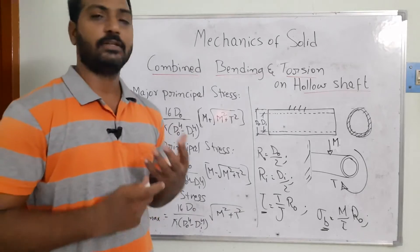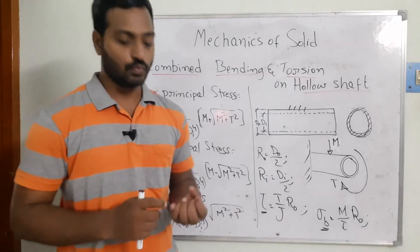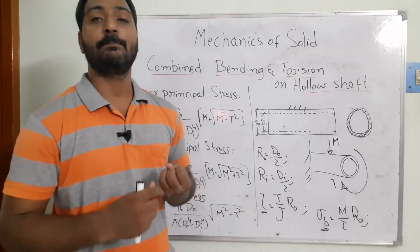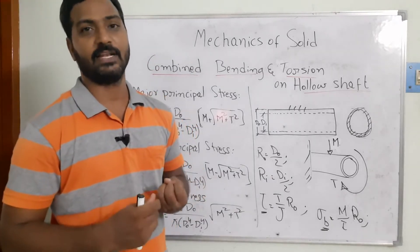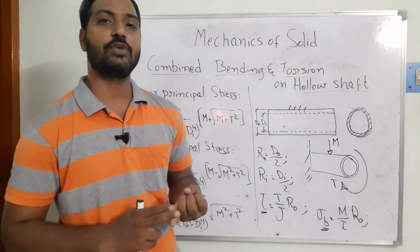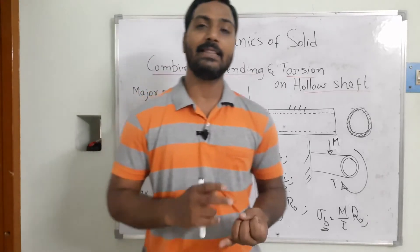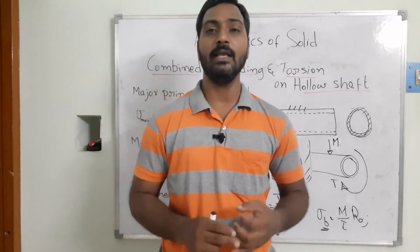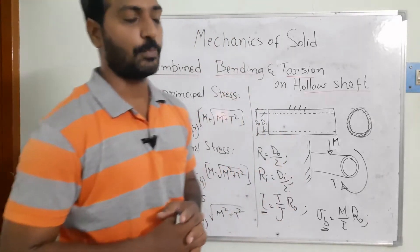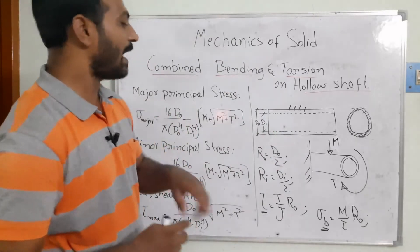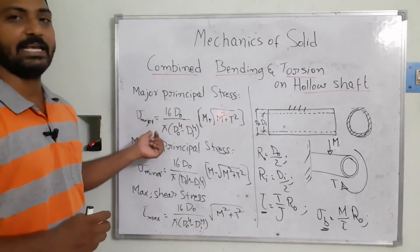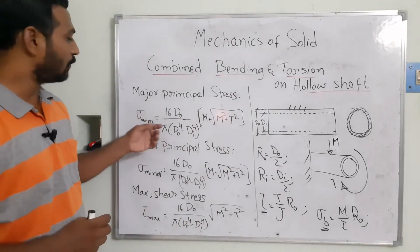Once we substitute the values, we apply the theories of failure. The first one is the major principal stress theory, the second is the minor principal stress, and the third is the maximum shear stress theory.